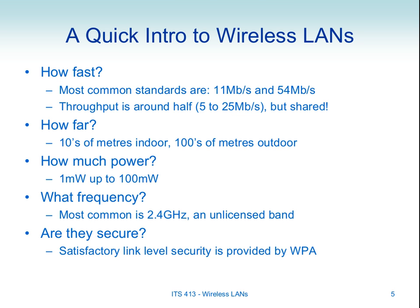Are wireless LANs secure? There are techniques available that provide a satisfactory level of link-level security. For security, the data is encrypted before sending and decrypted at the access point. Techniques like WPA and WPA2 provide satisfactory security for most purposes. However, you need to turn them on — if you don't use encryption techniques, your network is considered insecure. Whatever you transmit, someone nearby can receive and see what you sent.